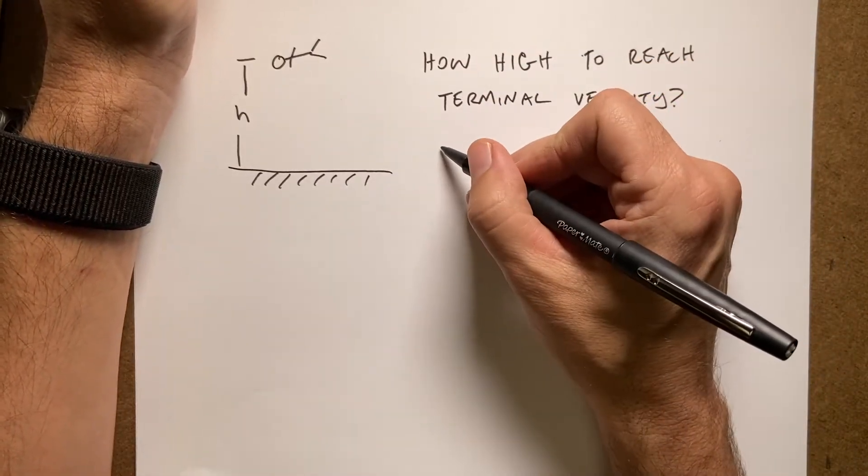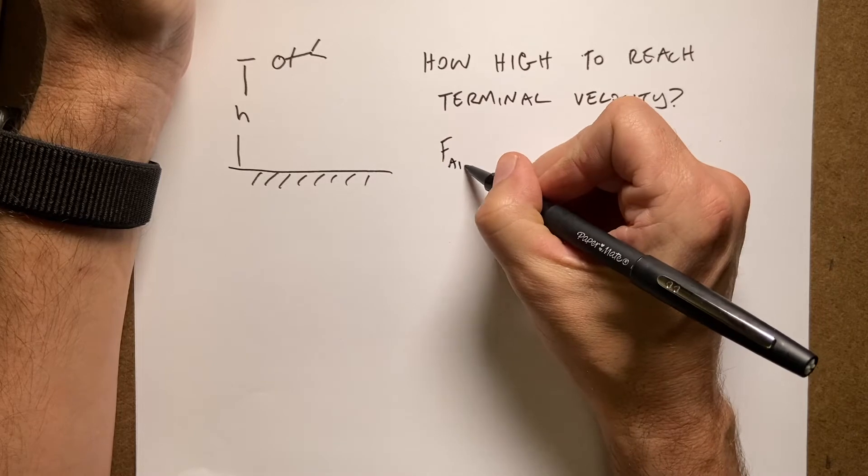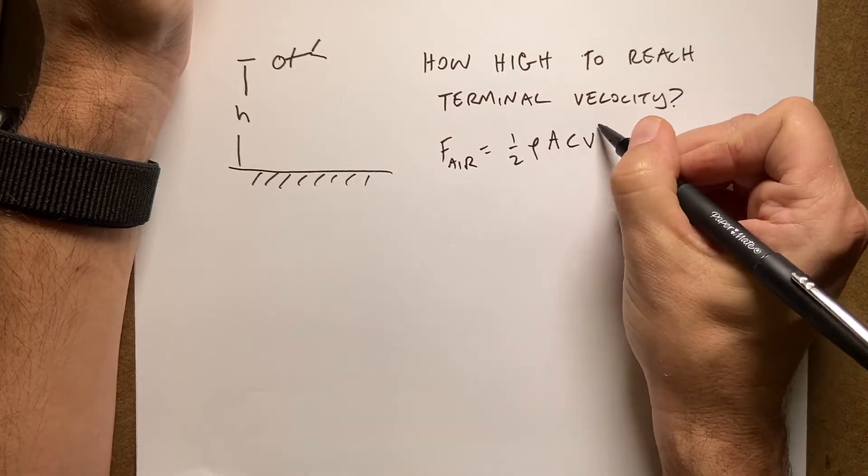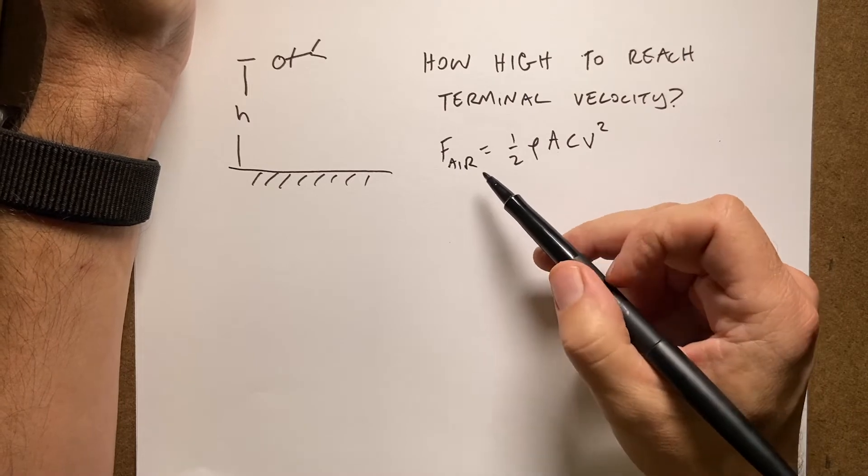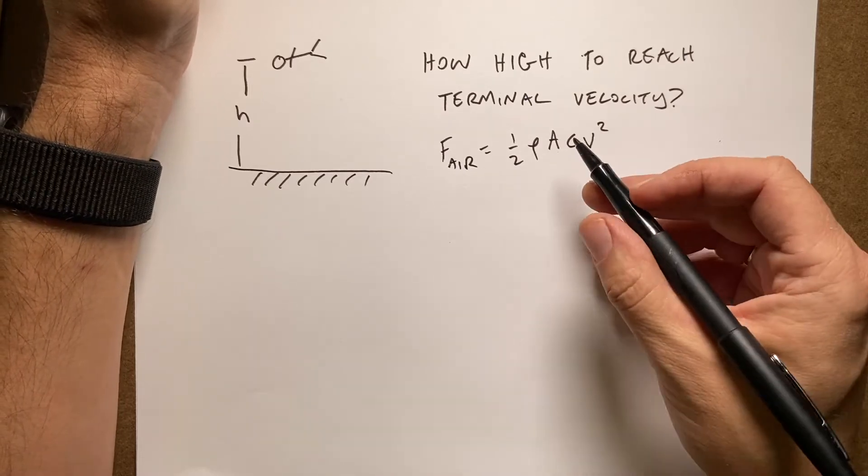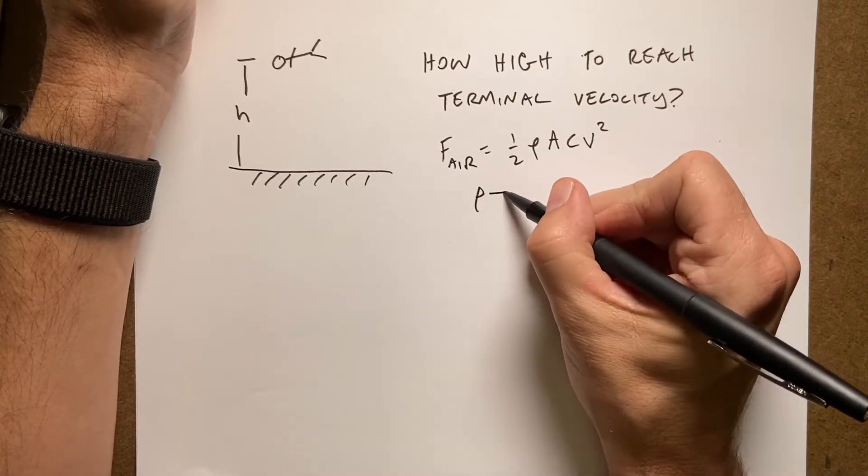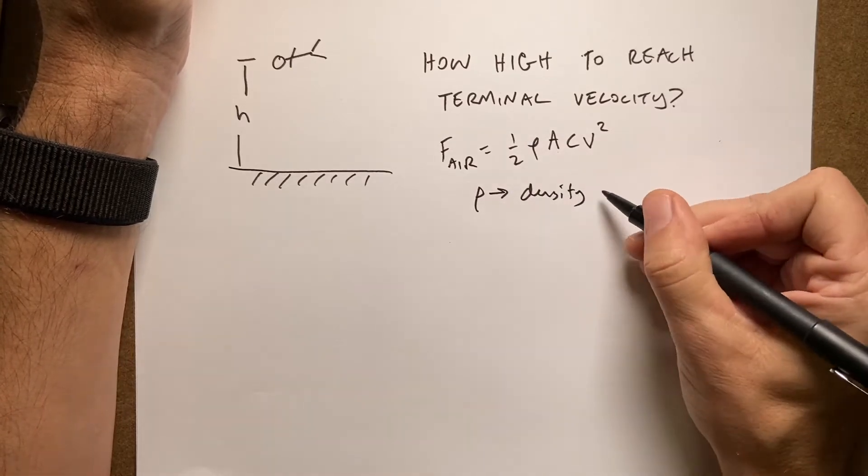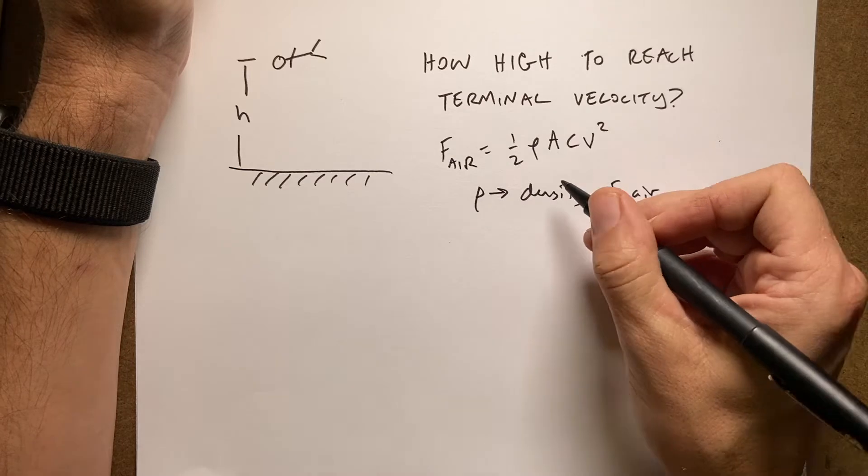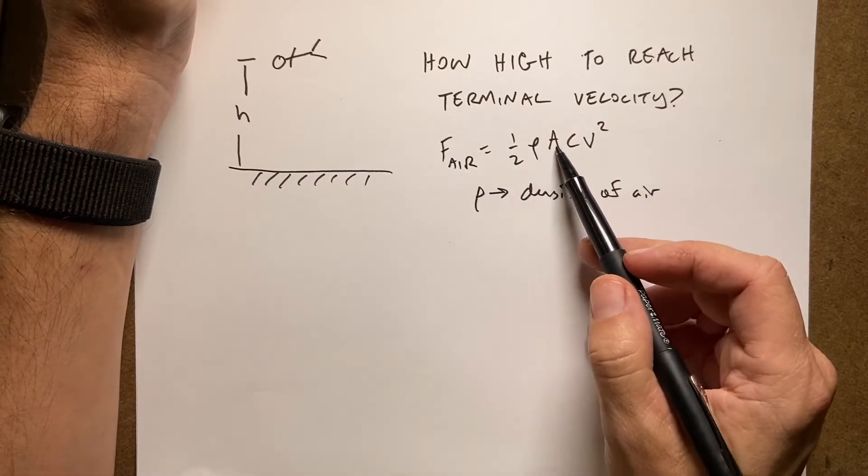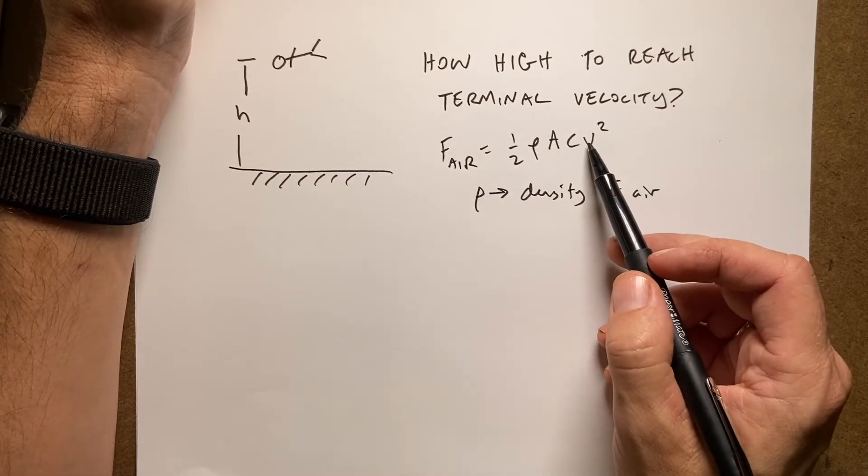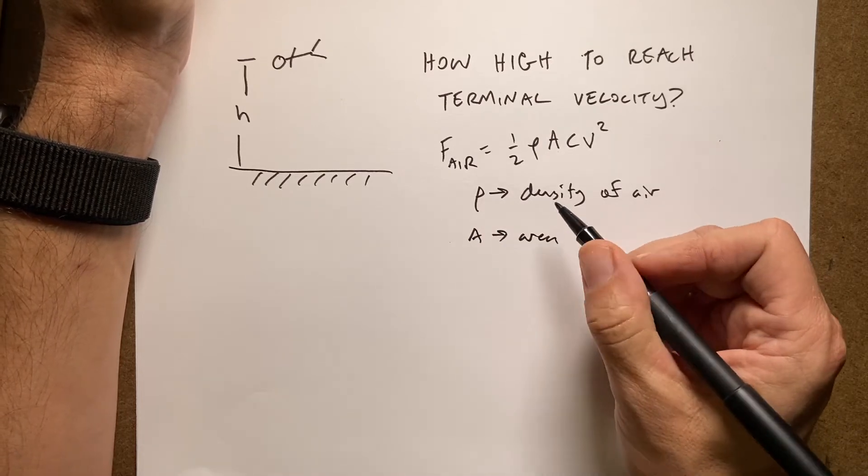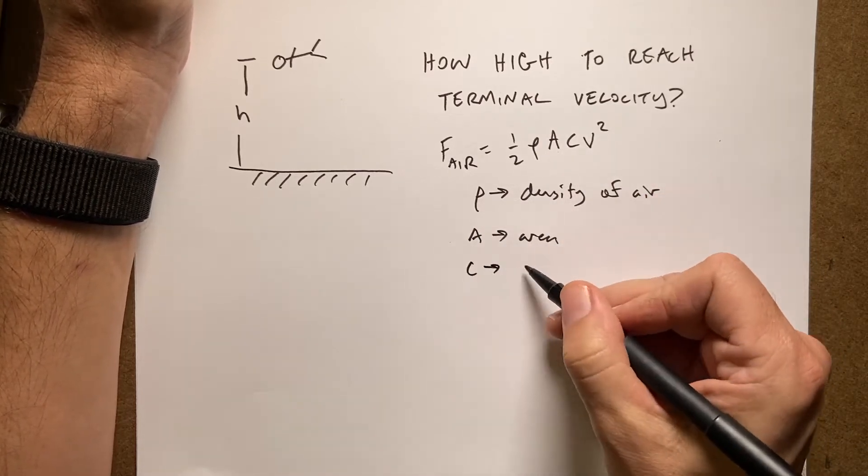Okay, so here's how we do that. The first thing is to consider that we do have air resistance. So this is a scalar value for the air resistance on an object. So rho is the density of air, or whatever.